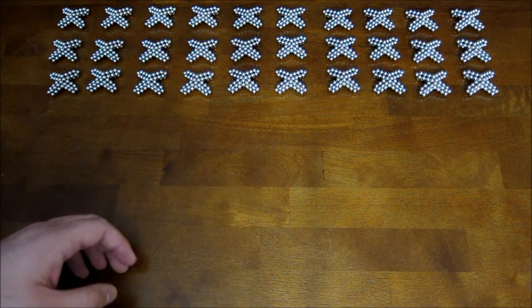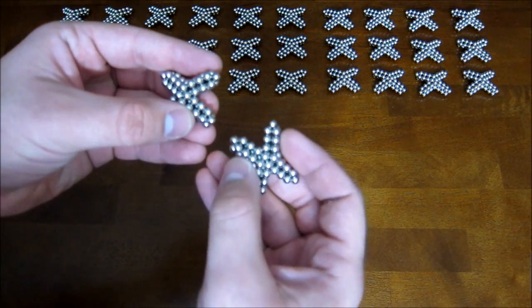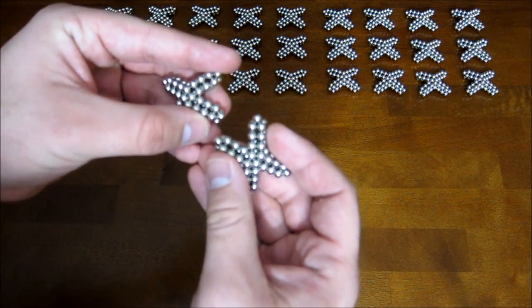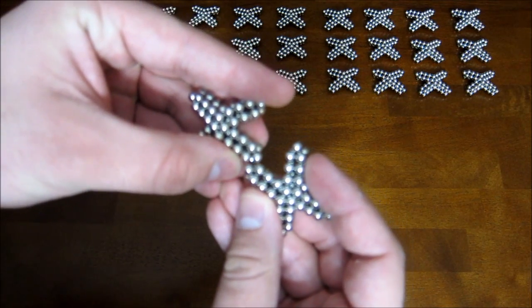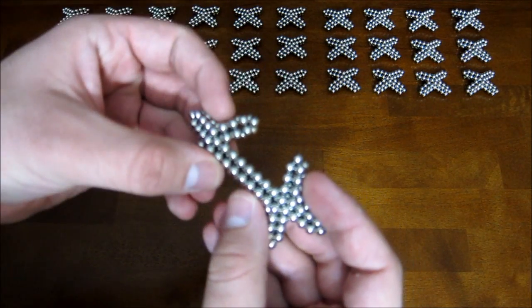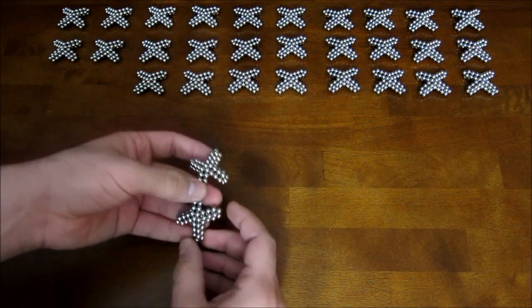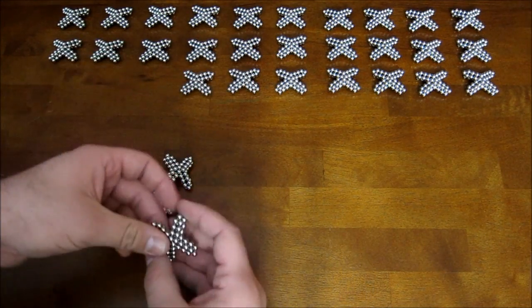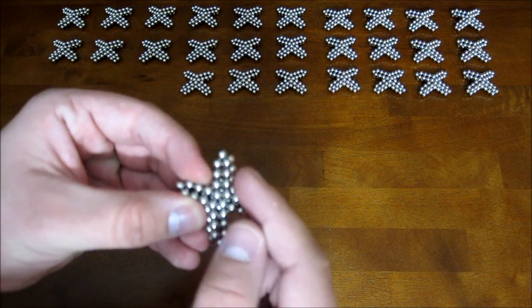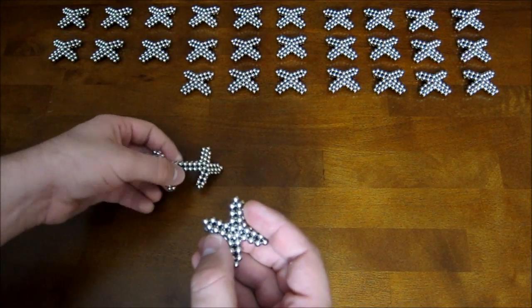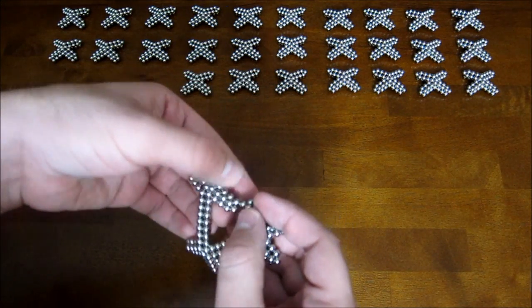So anyways, so what you do now is you take these and you can attach them together by bringing these magnets on the points to the sides of each other. And just kind of pushing them together until they join together like that. And you want to make sure that there's a definite acute angle and an obtuse angle on each one of these subunits.